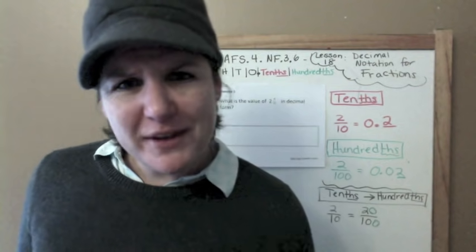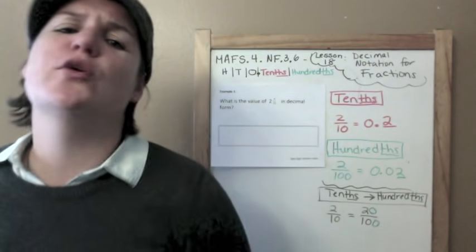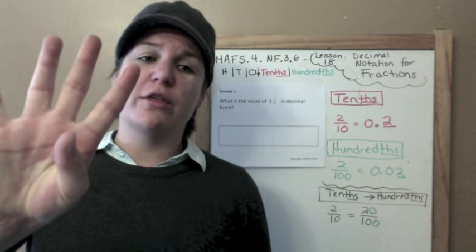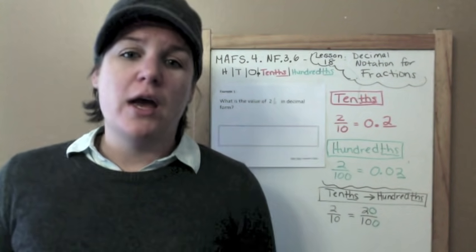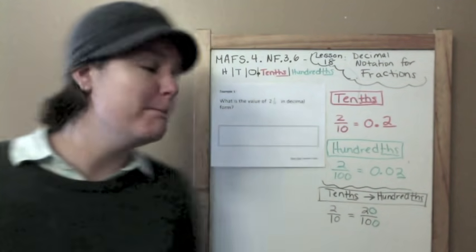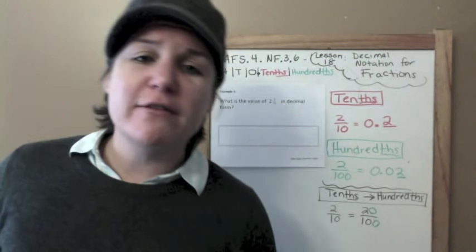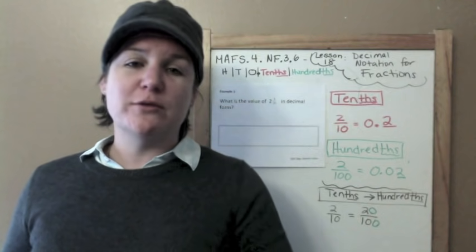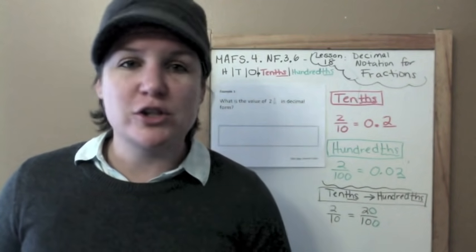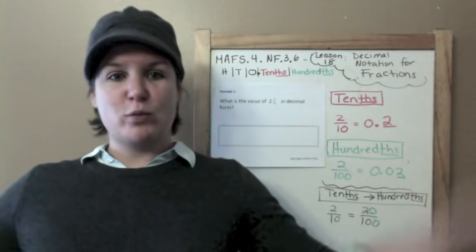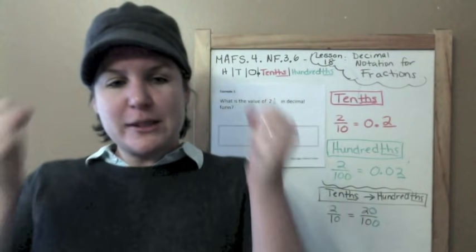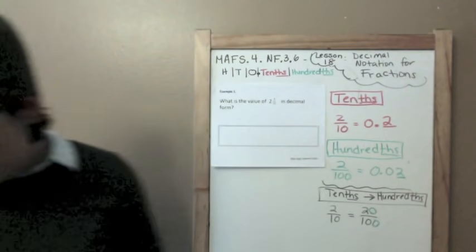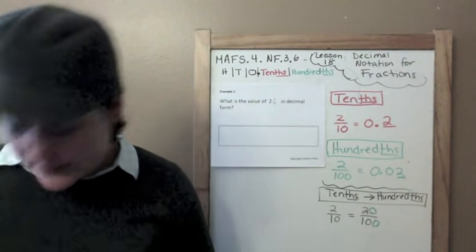Welcome, everybody, to another episode of How to Pass the Math FSA, the fourth grade edition. Today we're going to be working on MAFS.4.NF.3.6, which is Lesson 18 Decimal Notation for Fractions. I am pumped. I've been waiting to get to decimals. I'm so excited. So let's do this. I've got four examples for you today. It's going to be amazing.